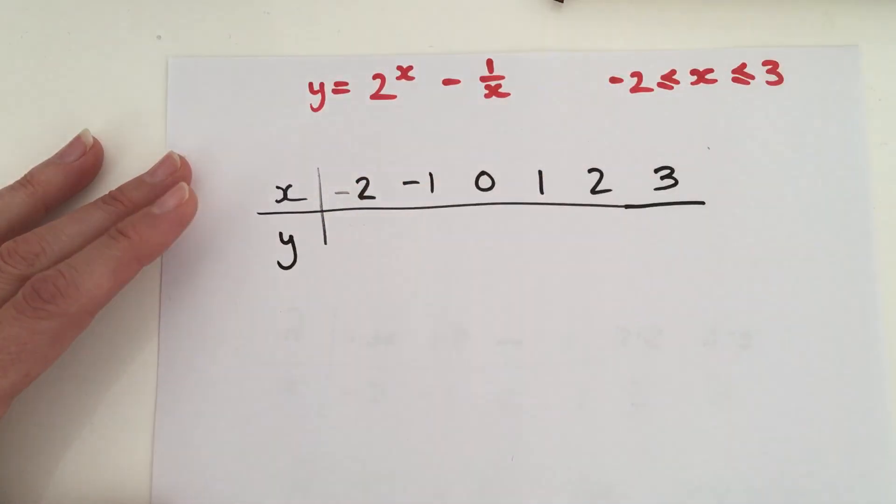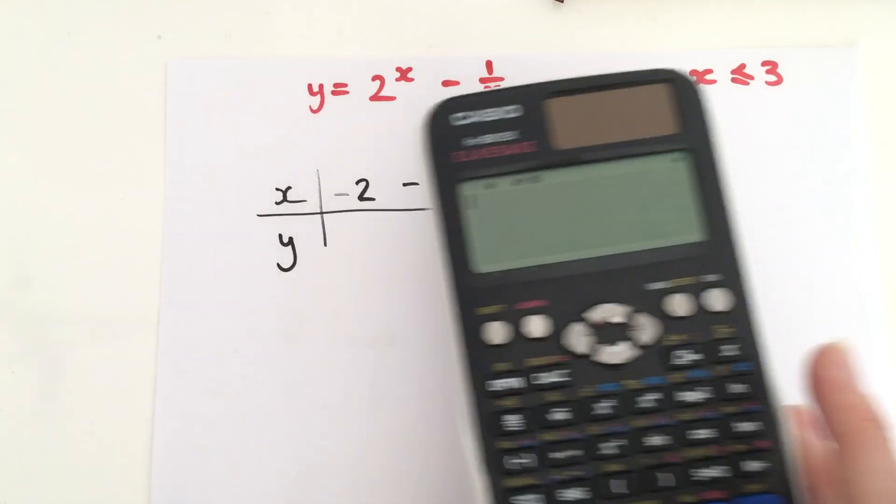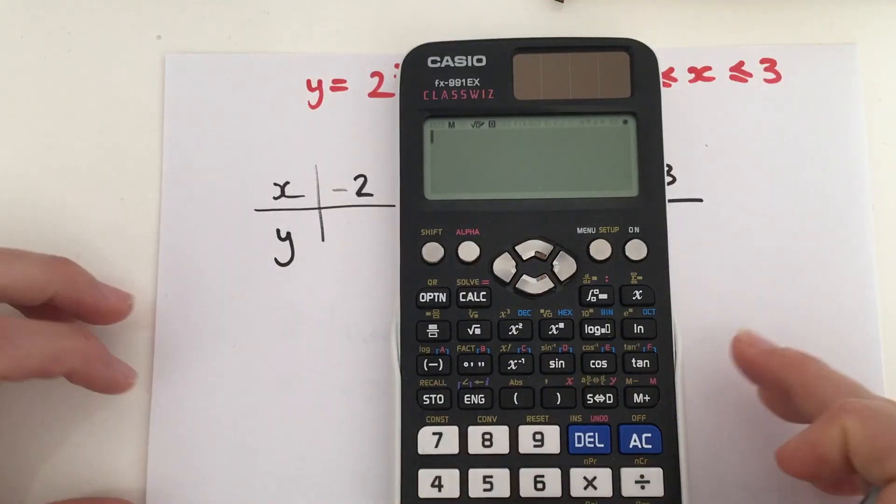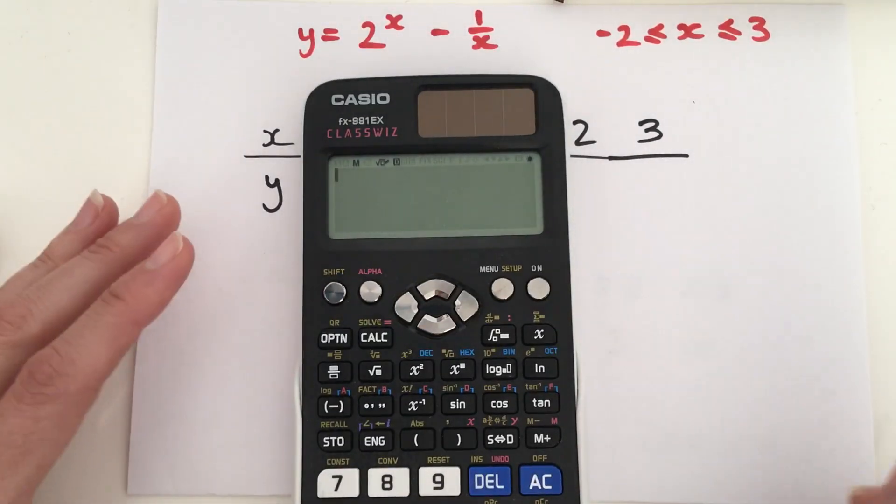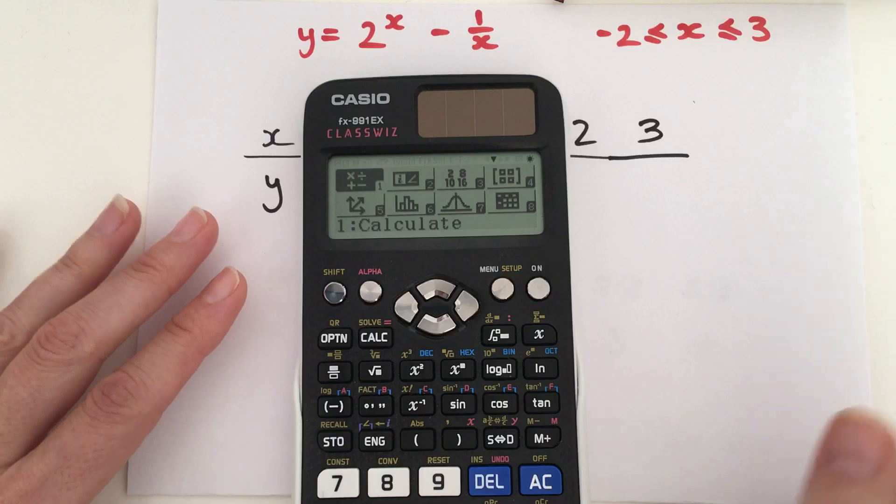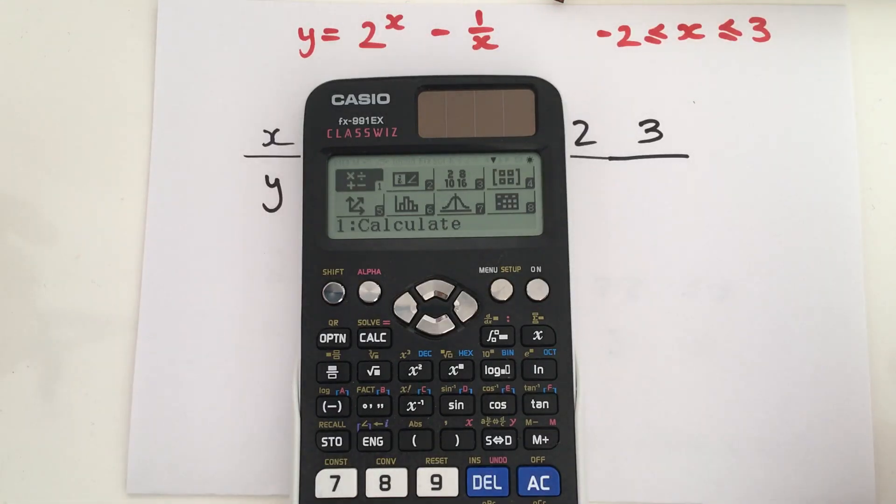So what we can do is we can use our ClassWiz calculator to help us create that. Now, on the ClassWiz calculator, on the menu, depending which variation of the ClassWiz you have, you have a table function.